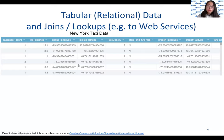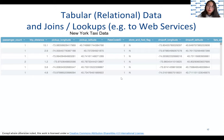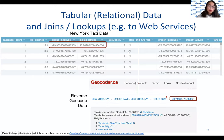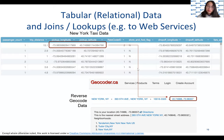For example, a geocoder will take the latitude and longitude and give a street address, so this might be meaningful. Furthermore, we can even use Google Maps to visualize the location.